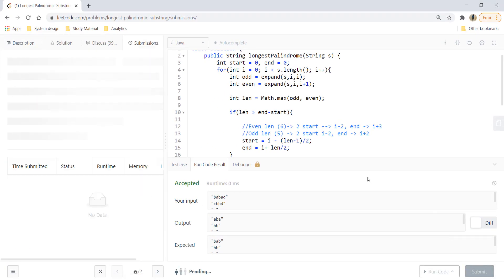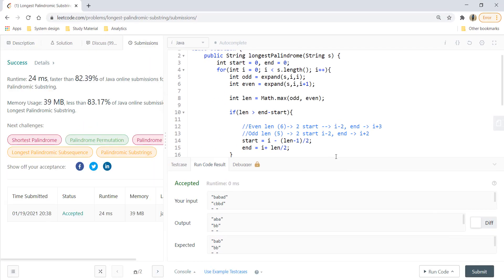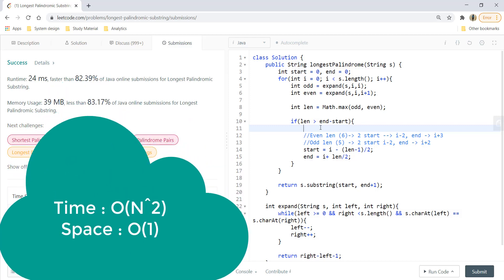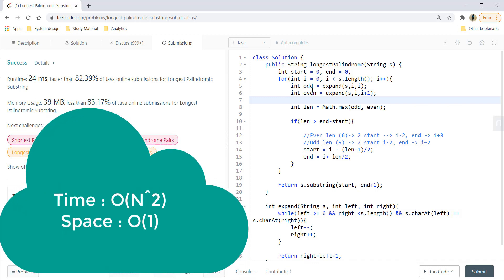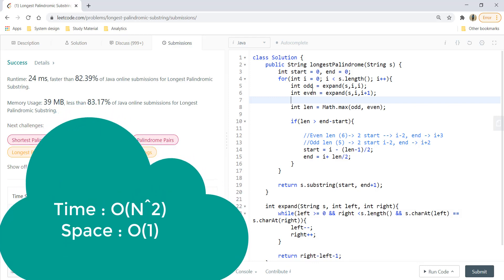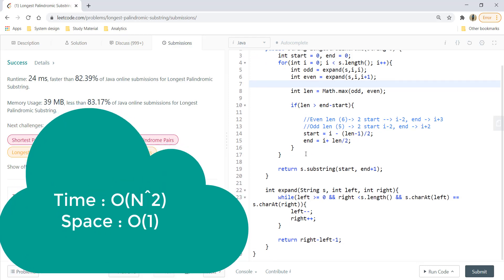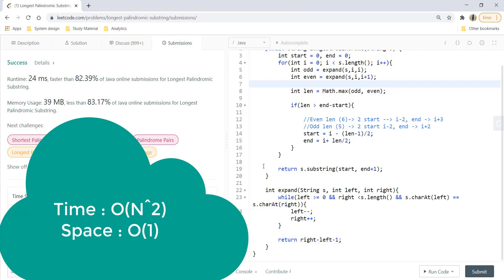Let's try to run this for all the sample test cases and it gives a right result. Let's try to submit this and it got submitted. For this, the time complexity is O(n^2) as for each index we are moving to left and right and for that we can reach both the extreme points. And so we can say that it can maximum go to n^2 while the space complexity for this question could be O(1) as we are not using any extra space.